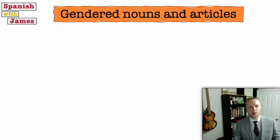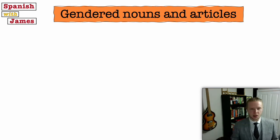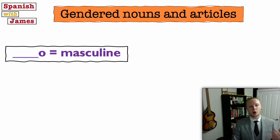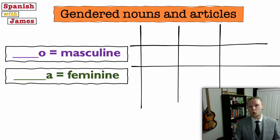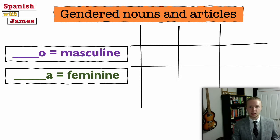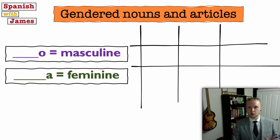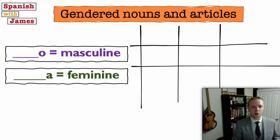Now hopefully we're familiar with the idea that in Spanish nouns have genders — they're either masculine or they're feminine. Generally, and it's not always the case, but a lot of the time an O ending means masculine and an A ending means feminine. There are loads of nouns that end in something other than O or A, but hundreds if not thousands do follow this pattern. Most of the time: O ending is masculine, A ending is feminine.